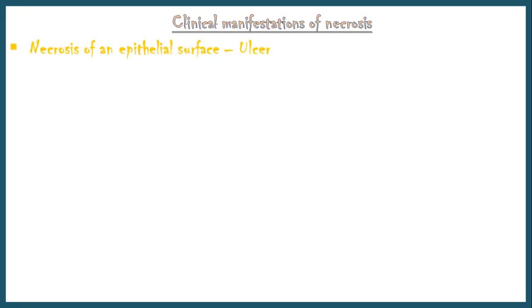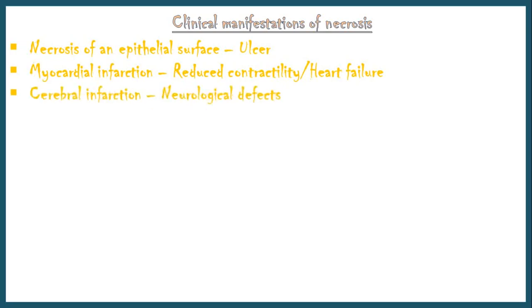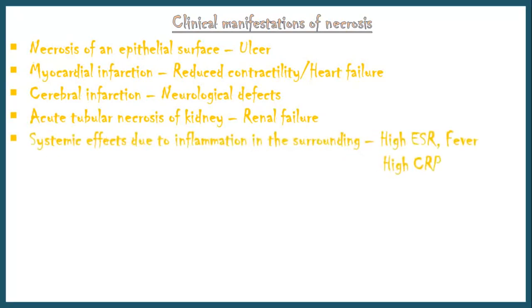Now let's see some clinical manifestations of necrosis. Necrosis of an epithelial surface results in an ulcer. Necrosis of myocardial tissue after a myocardial infarction causes reduction in contractility of the heart and even heart failure. Necrosis of cerebral tissue after a cerebral infarction gives rise to neurological defects. Acute tubular necrosis of the kidney may cause renal failure. Systemic effects may occur due to inflammation in surrounding tissue, including high ESR, fever, and high C-reactive protein levels. Local effects may include pain and edema.